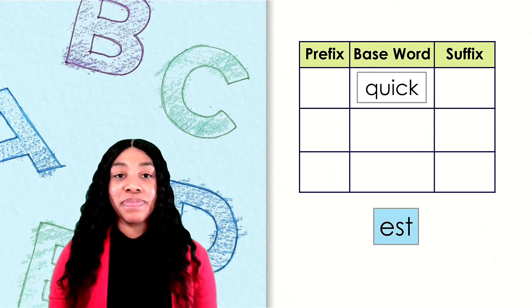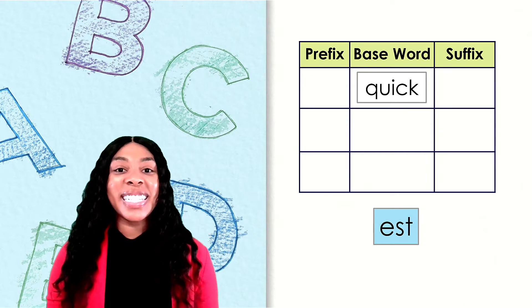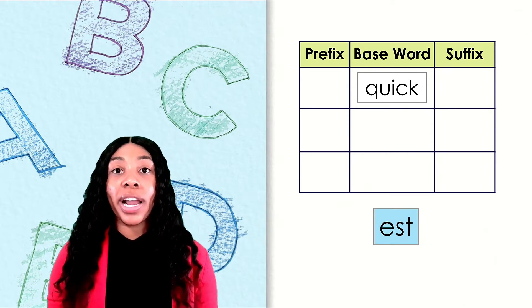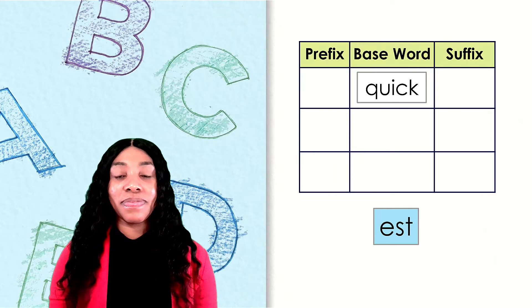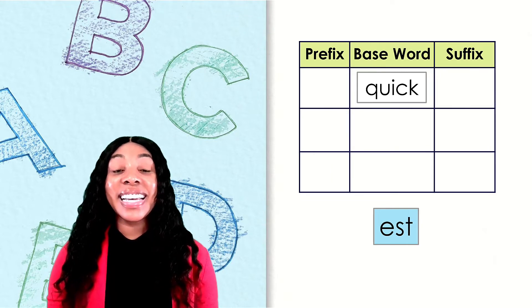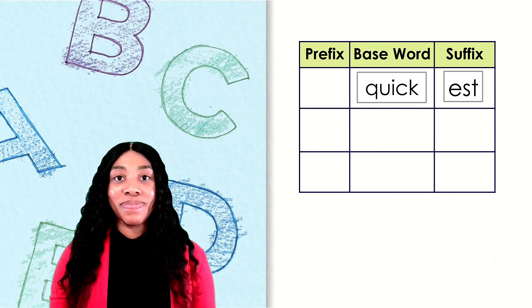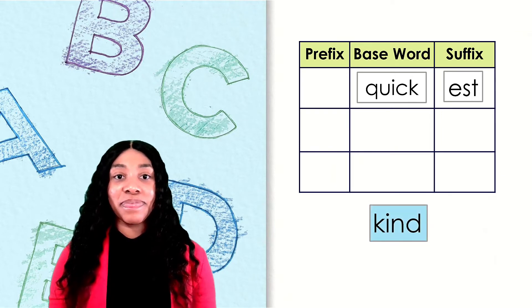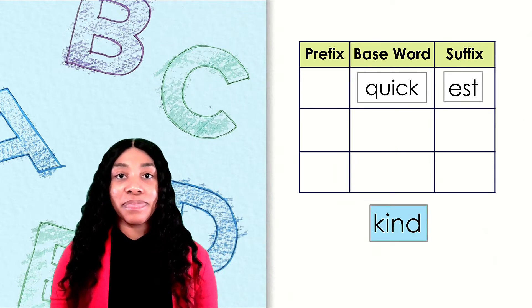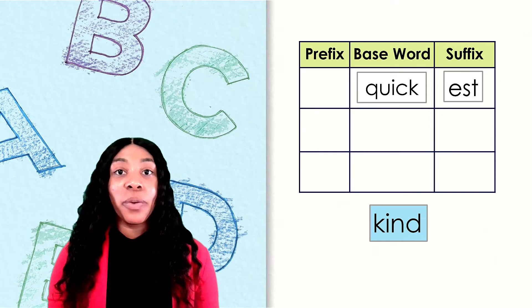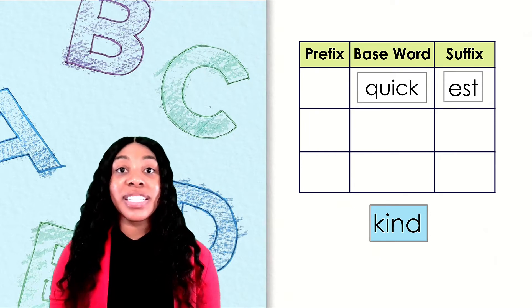Here's our next word. Est. Is est a base word or affix? Est is a suffix. We can add it to a base word to mean the most. Let's look at another word. Kind. Is kind a base word or affix? Kind is a base word. We can add affixes to it to change its meaning.